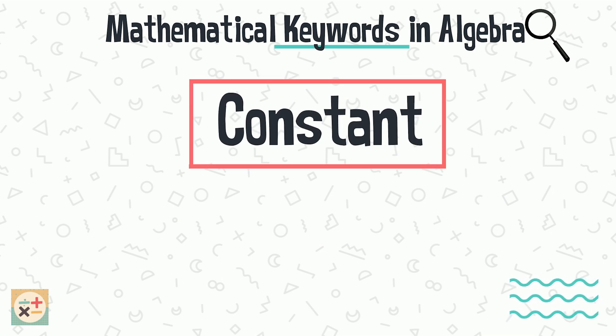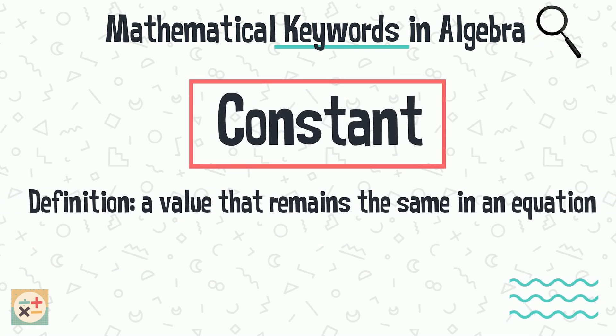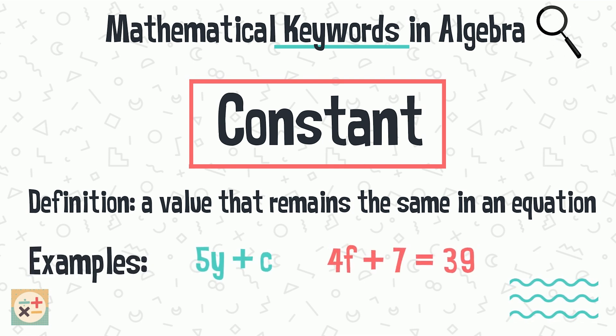A constant can be a variable or number that has a fixed value in an equation. In these examples, C, 7 and 39 are all constants.